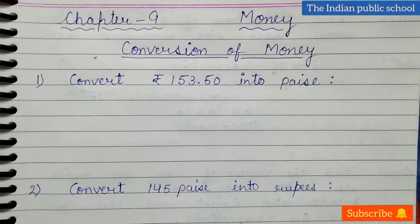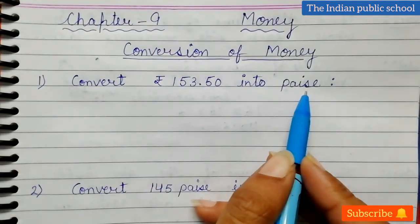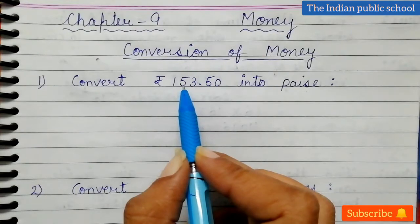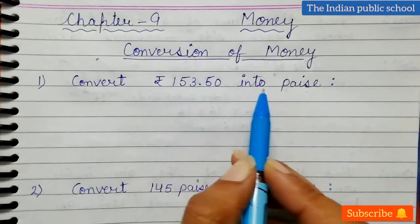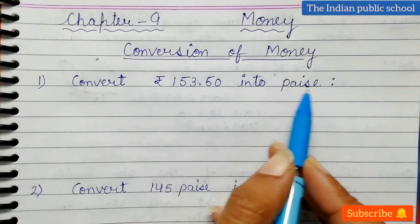Hello students. The next topic of chapter number 9, Money, is conversion of money. We will convert rupees into paisa, and after that we will convert paisa into rupees. You know there are only two units for money we will use: rupees and paisa.